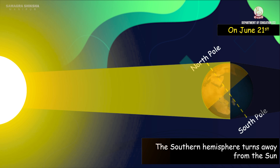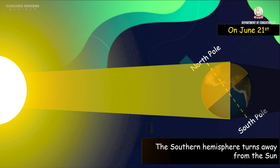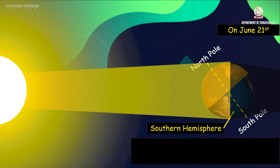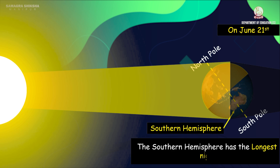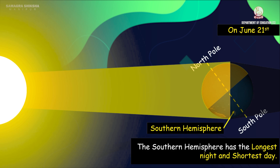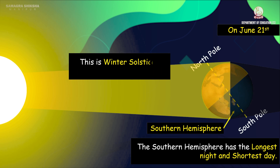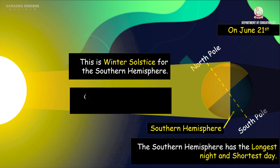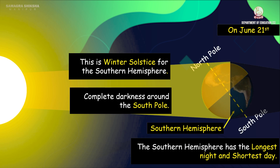The southern hemisphere has the longest night and the shortest day, making it winter season. Also, there is continuous darkness around the south pole — the sun does not rise at all there.